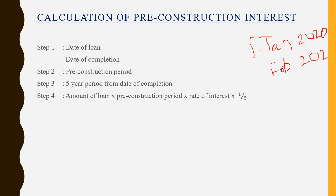The period during which the property was under construction is called as pre-construction period. Then what is pre-construction interest? Say the assessee has taken a loan to build his property. The interest that he has paid during this pre-construction period is called as pre-construction interest.